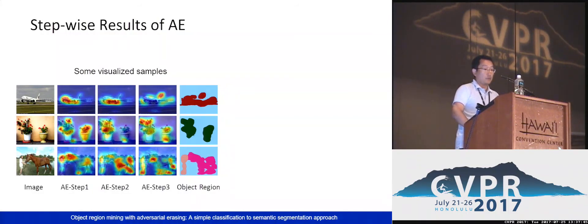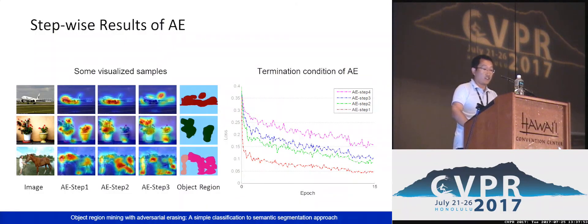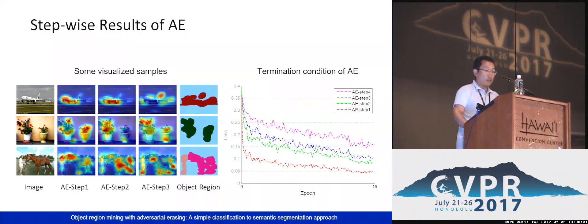Here is another problem: how many adversarial erasing steps should be conducted? The left figure shows the comparison of classification training loss curves for different adversarial erasing steps. We observe that the loss value is very small when using the original image for training. By performing adversarial erasing for two steps, the converged loss will slightly increase. By continuing to perform one more step, the loss converges at a large value. We consider this step as over-erasing. Over-erasing may introduce many true negative regions and have a negative effect on the following segmentation model training. Therefore, we only use the mined regions from the first three adversarial erasing steps.